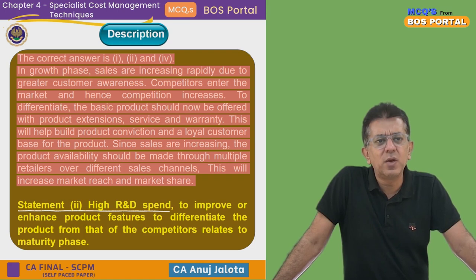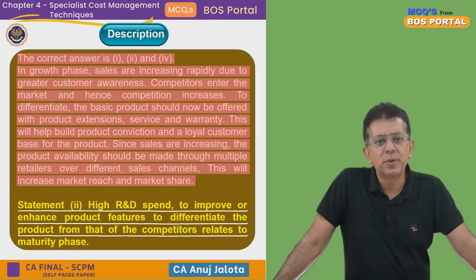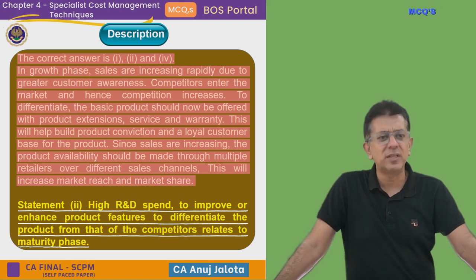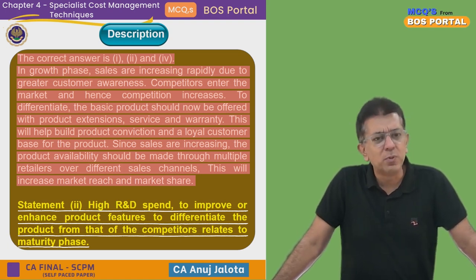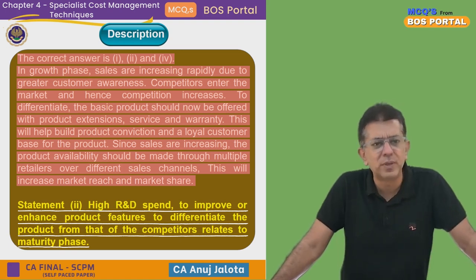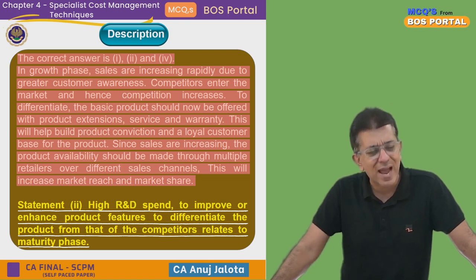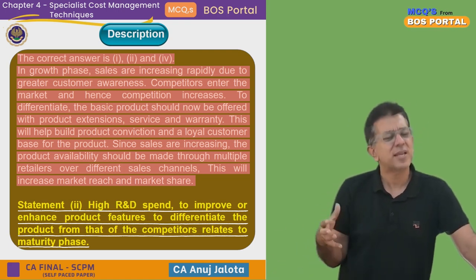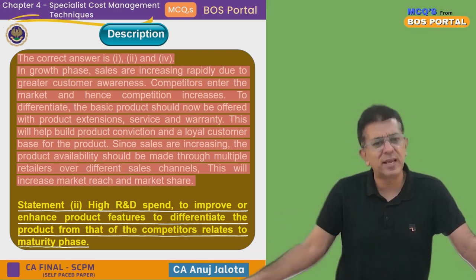The statement about high R&D to improve or enhance product features to differentiate from competitors relates mainly to the maturity stage. It can also happen in the declining stage, although that won't help much since people are already fed up of your product. R&D actually happens in the introduction stage and can happen towards the end of the maturity or declining stage.